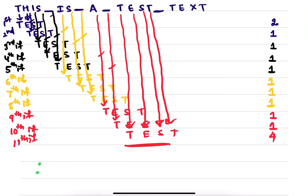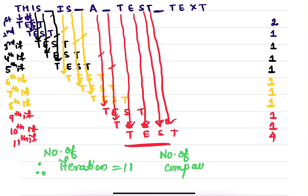So how many iterations do we require? We need 11 iterations total, and the number of comparisons made are: 2 plus 1 plus 1 plus 1 plus 1 plus 1 plus 1 plus 1 plus 1 plus 1 plus 4, that is 15. So whenever you encounter white spaces, you have to compare those white spaces also with the pattern. Thank you.